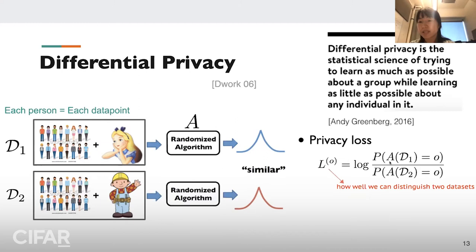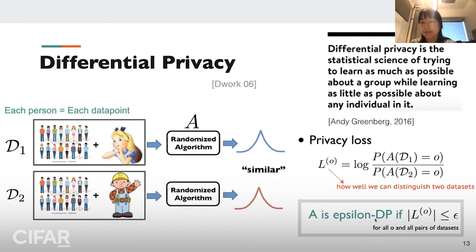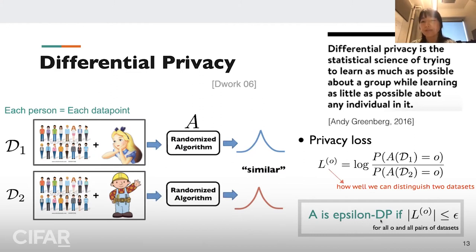More formally, in differential privacy we look at a quantity called privacy loss: the log probability ratio, where the numerator is the probability of algorithm A given D1 outputting a particular output O, and the denominator is the probability of A given D2 outputting the same output O. D1 and D2 differ by one entry and are neighboring datasets. When the absolute value of this privacy loss is bounded by epsilon for all possible outputs O and all pairs of neighboring datasets, we say the algorithm is epsilon-differentially private.